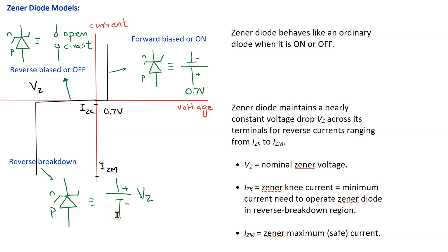There are three important Zener diode parameters. VZ denotes the nominal Zener voltage. IZK is the Zener knee current — it is the minimum current needed to operate the Zener diode in reverse breakdown region. If the current in the Zener diode is less than IZK then the Zener diode is in reverse bias or off mode.